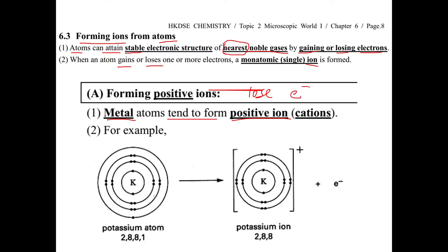For example, the potassium atom is 2, 8, 8, 1. When it loses one electron, it becomes 2, 8, 8. So it's K, the symbol, but it is not zero, it becomes positive one. We say K plus, so this is an ion. The atom is not electrically neutral, it becomes positive. We cannot say atom again, we say ion. It becomes potassium ion.